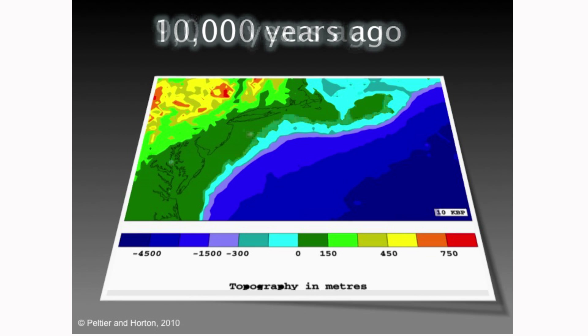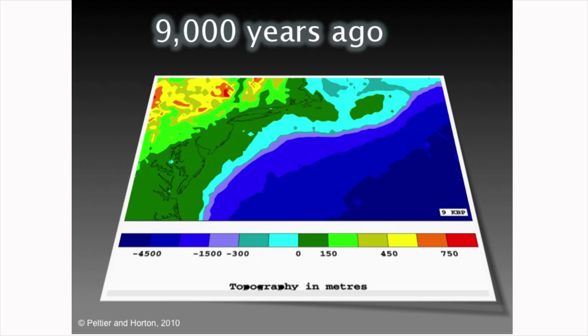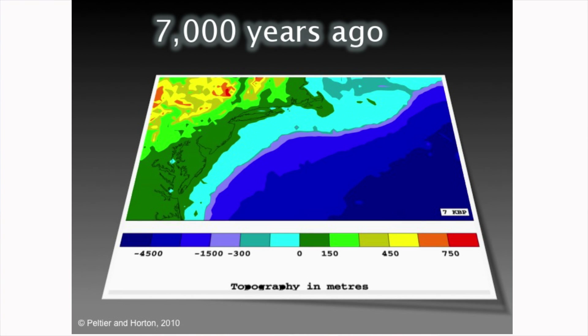Then what happens when sea level rises? By 9,000 years, sea level rising causes flooding, devastating erosion, and the shoreline retreats — we've created an island off Cape Cod. By 8,000 years ago, there is further retreat; our coastlines are retreating under these rates of rise by 10 to 20 miles. By 7,000 years ago, further retreat. But by 6,000 years ago, our coastlines look much like they do today.